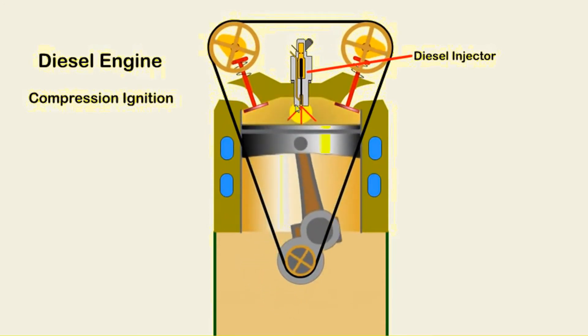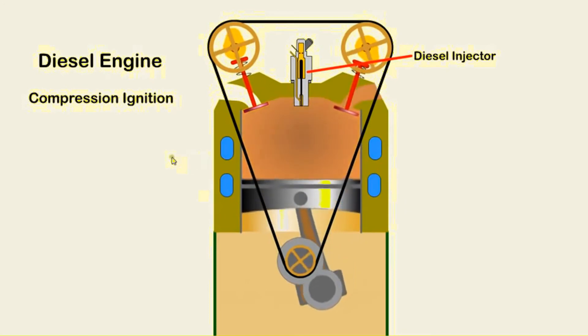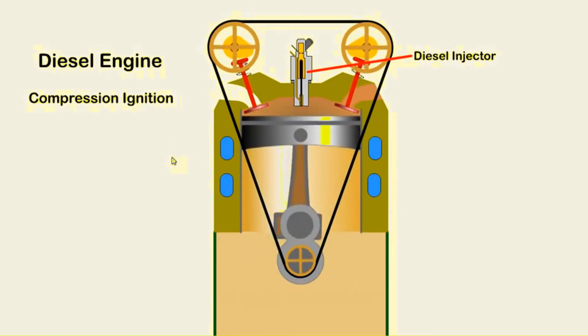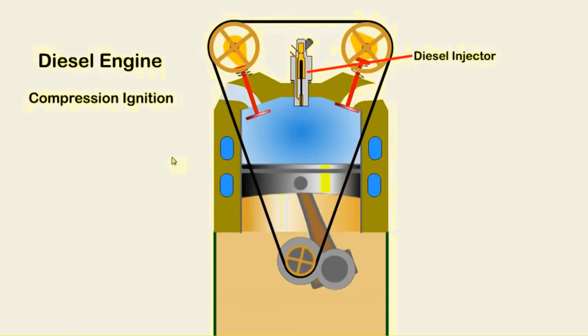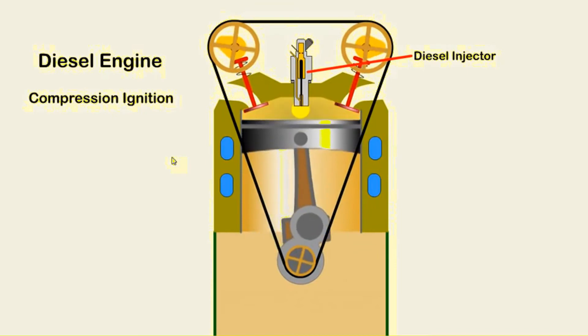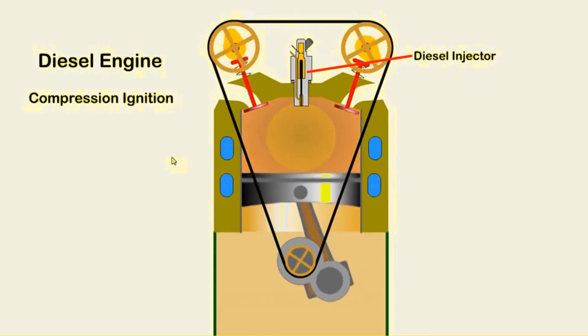When the piston is near TDC, diesel is injected directly into the cylinder and ignites the hot air. These engines operate at a higher compression ratio, are heavier in construction, provide good torque and are particularly suited to turbocharging.